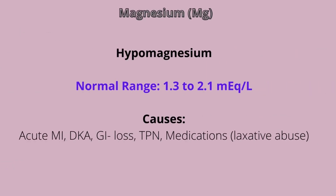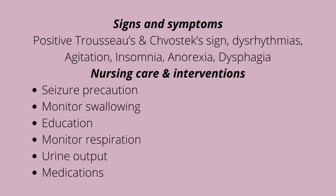Our last electrolyte imbalance is magnesium. The normal magnesium range is between 1.3 to 2.1 milliequivalents per liter. Some causes of hypomagnesemia include medications like amphotericin B, diuretics, and cyclosporins, as well as alcoholism, GI loss, TPN, laxative abuse, hypocalcemia, hypokalemia, DKA, hyperparathyroidism, and acute MI.